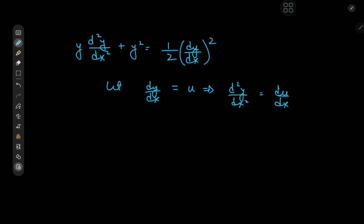Now notice that we would have a differential equation in three variables u, x, and y, which is of course far from ideal. So we'll write this as du/dy times dy/dx using the chain rule, and dy/dx is our u variable, so we have u times du/dy equal to d²y/dx².